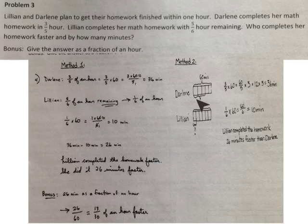We can also show this in a tape diagram. 60 is our whole. Darlene finished hers in 3/5 of an hour. 3/5 times 60 is 36 minutes. Lillian, we know completed hers in 1/6, since 5/6 of an hour was remaining. She completed it in 1/6 of an hour, 10 minutes. Again, Lillian completed hers 26 minutes faster.